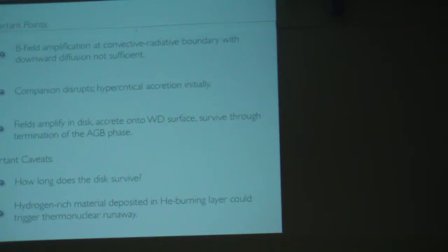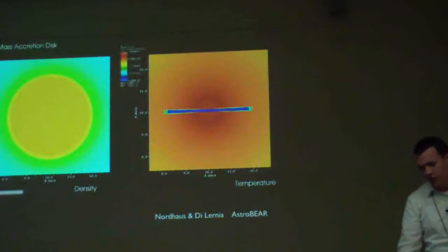The other important caveat is that hydrogen-rich material accreting onto a helium burning layer could trigger some sort of thermonuclear runaway and that would explode the entire star itself. We did some simulations of the first point to see if the disc would be expected to survive on longer timescales.